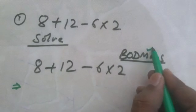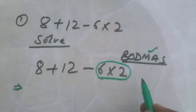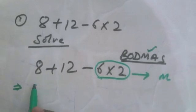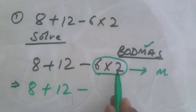6 × 2 = 12, so we have 8 + 12 - 12. Next is addition.